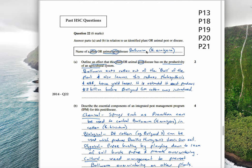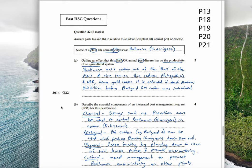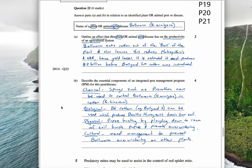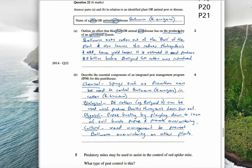Moving over here, I answer part A and B in relation to pest or animal plant disease. Outline an effect that this plant or animal pest and disease has on the productivity of the agricultural system. The key thing here is the productivity. The one I've chosen is bollworm. I put in H. armigera. Bollworm eats cotton out of the boll of the plant and also the leaves. This reduces photosynthesis and NAR, hence yield losses. It's estimated that it cost producers $2 billion before Bollguard GM cotton was introduced. So that is an important statistic, and that is clearly about the productivity.